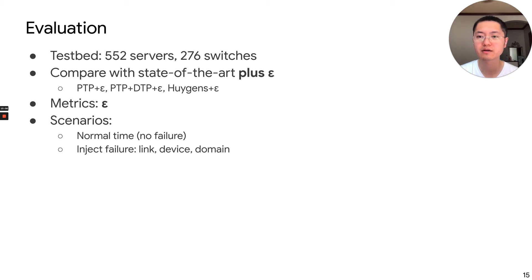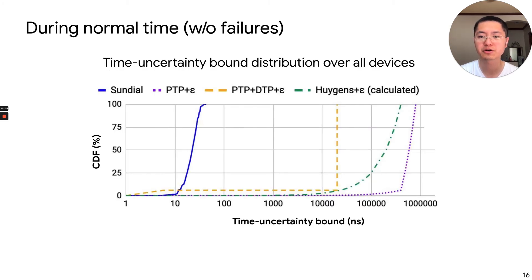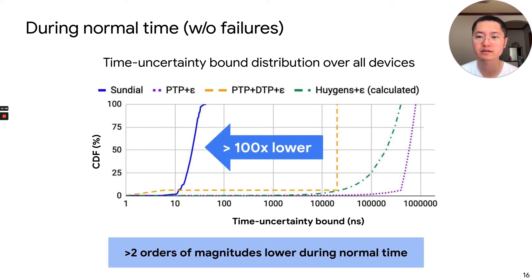In evaluation, we run Sundial in a testbed with more than 500 servers and more than 200 switches. We compare with state-of-the-art solutions. Since they don't provide time uncertainty bounds, we also add a calculation of time uncertainty bounds to them. We test them under different scenarios, including the normal time when there is no failures, and also under the case when we inject failures. During the normal time, we show the distribution of the time uncertainty bounds. We can see that Sundial has two orders of magnitude lower time uncertainty bounds than all other schemes. Even the maximum value is only 43 nanoseconds.